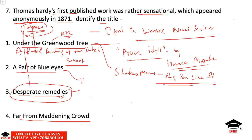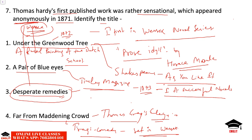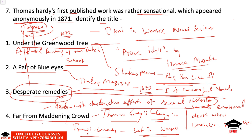A Pair of Blue Eyes appeared in Tinsley's Magazine in 1873 and was the first of his successful novels. Far from the Madding Crowd — its title taken from Thomas Gray's Elegy Written in a Country Churchyard — is a tragic comedy set in Wessex. It reveals the emotional depths underlying rustic life and deals with the destructive effects of sexual obsession. After its success, Hardy gave up architecture and married Emma Gifford.